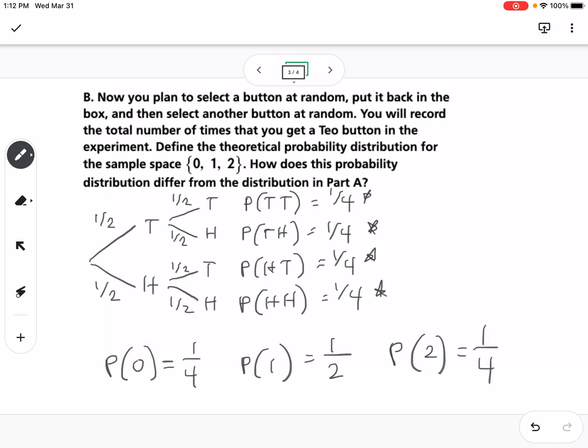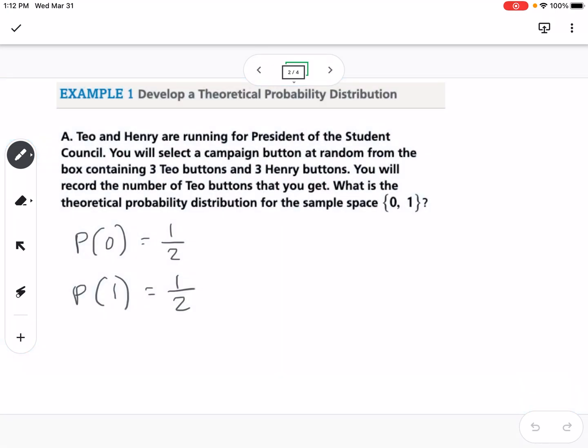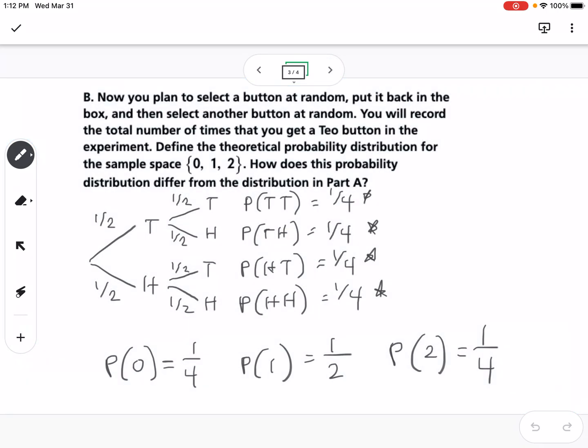How does the probability distribution differ from the distribution in part A? This is what we call uniform distribution because the probabilities were the same. And this is not uniform because all the probabilities are not the same.